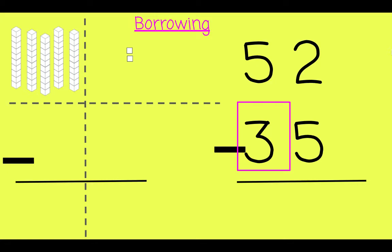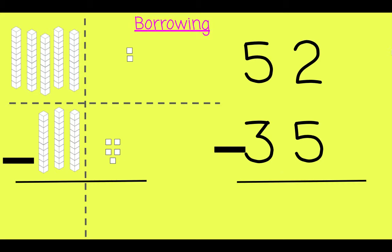This 2 is just 2. This 3 is 30, or 3 10s, so there are 3 10 rods over there. And that 5 is 5. Great, time to subtract. We can't take 5 away from 2 because 5 is greater than 2, so we need to borrow.